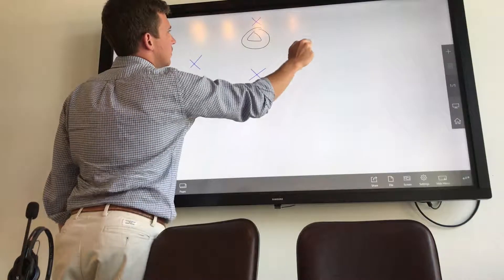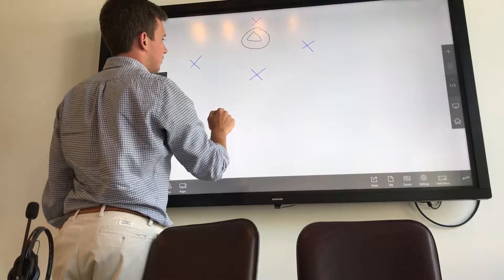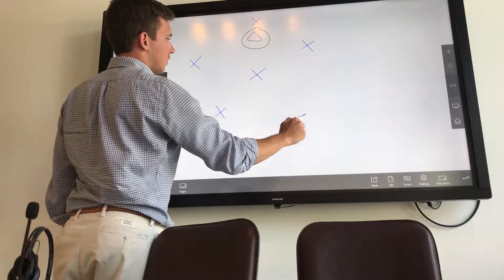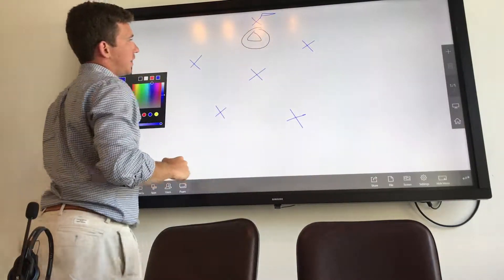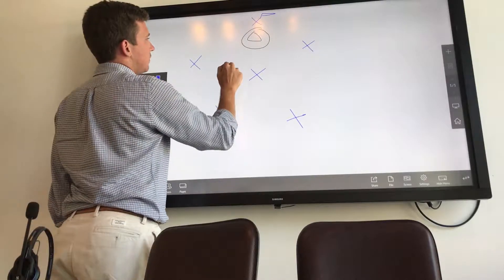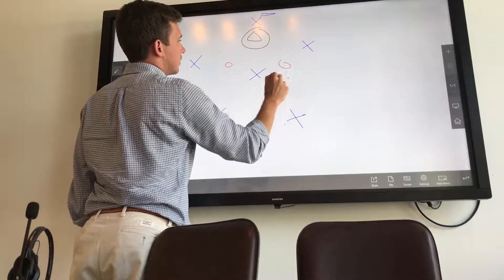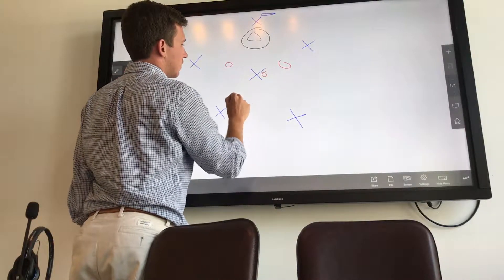So we got a 1-3-2. Get the ball behind the X. Defense is going to be in their box.